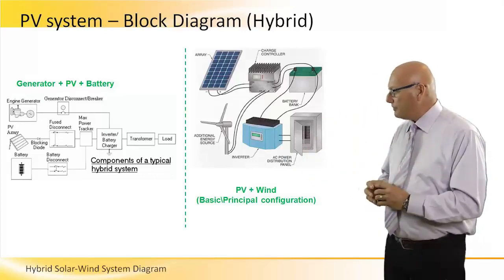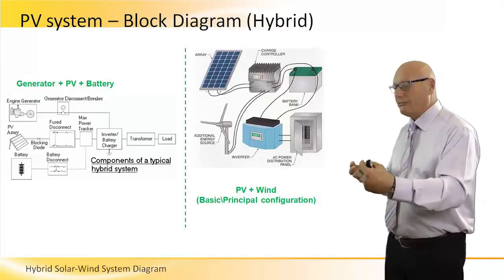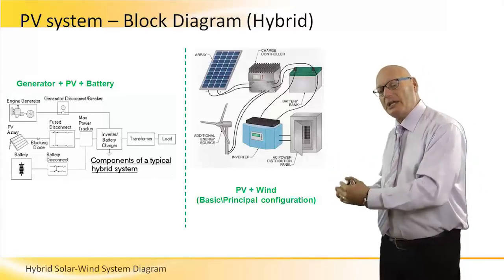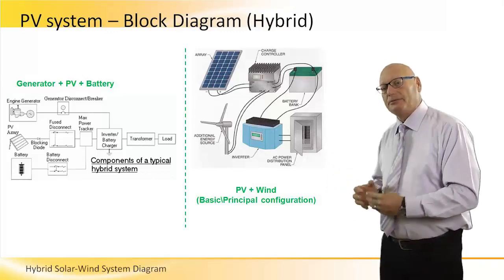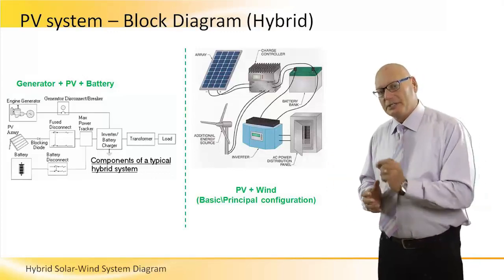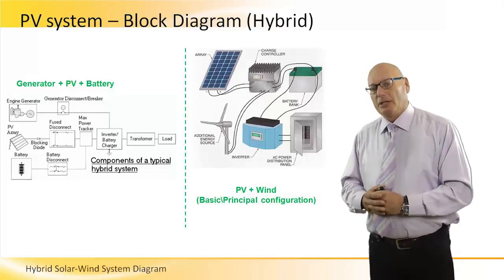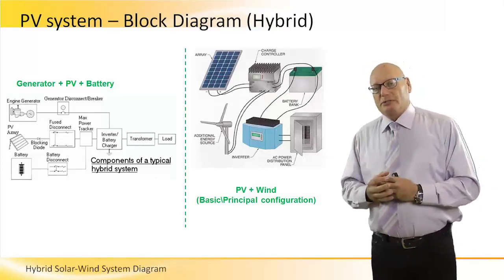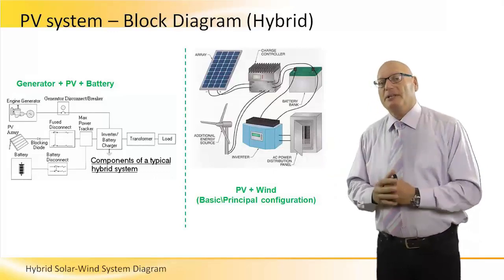What I'd like to emphasize here is the fact that we have two energy sources — wind and PV solar — and they both go into a charge controller. But there's a problem: the charge controller sees two sources which vary independently.